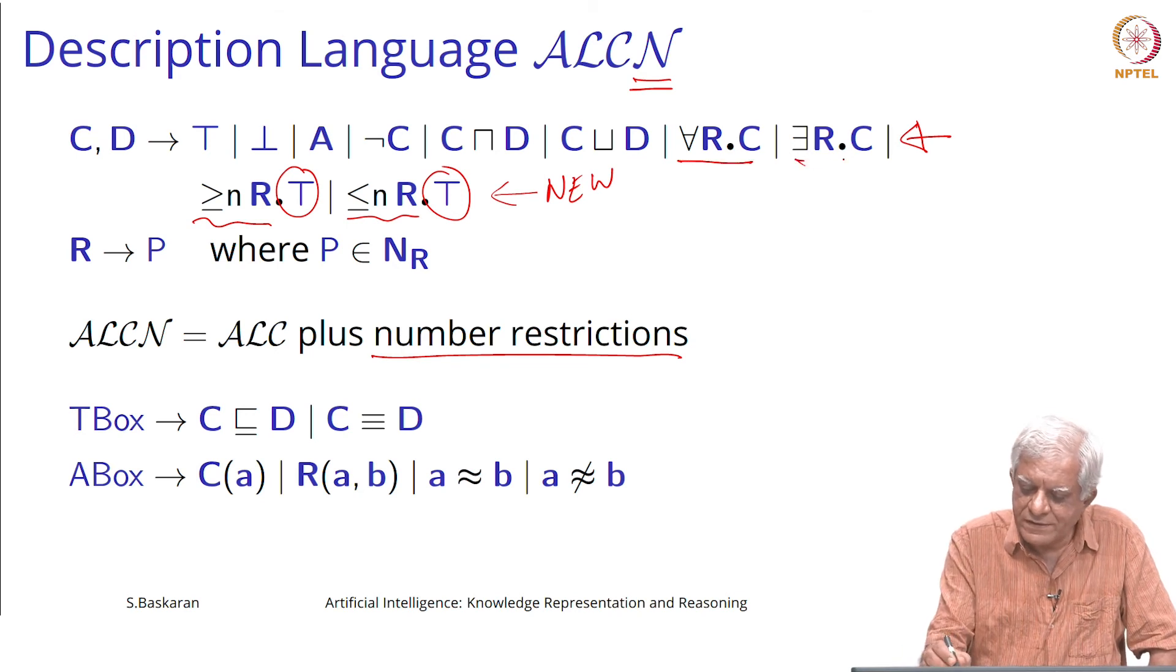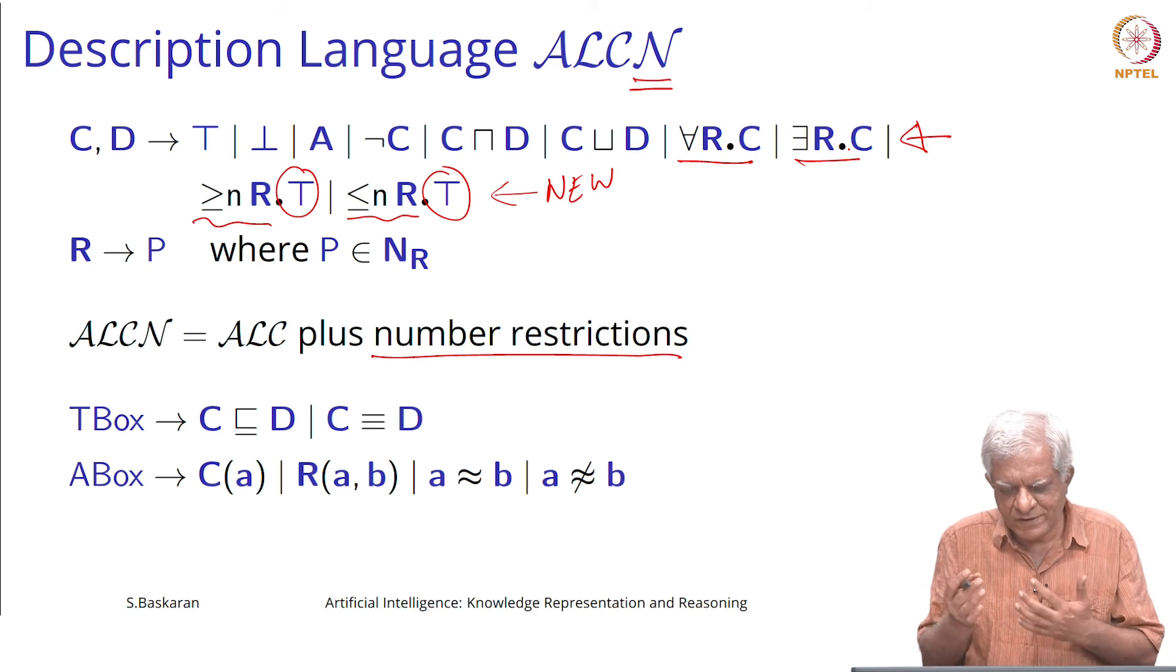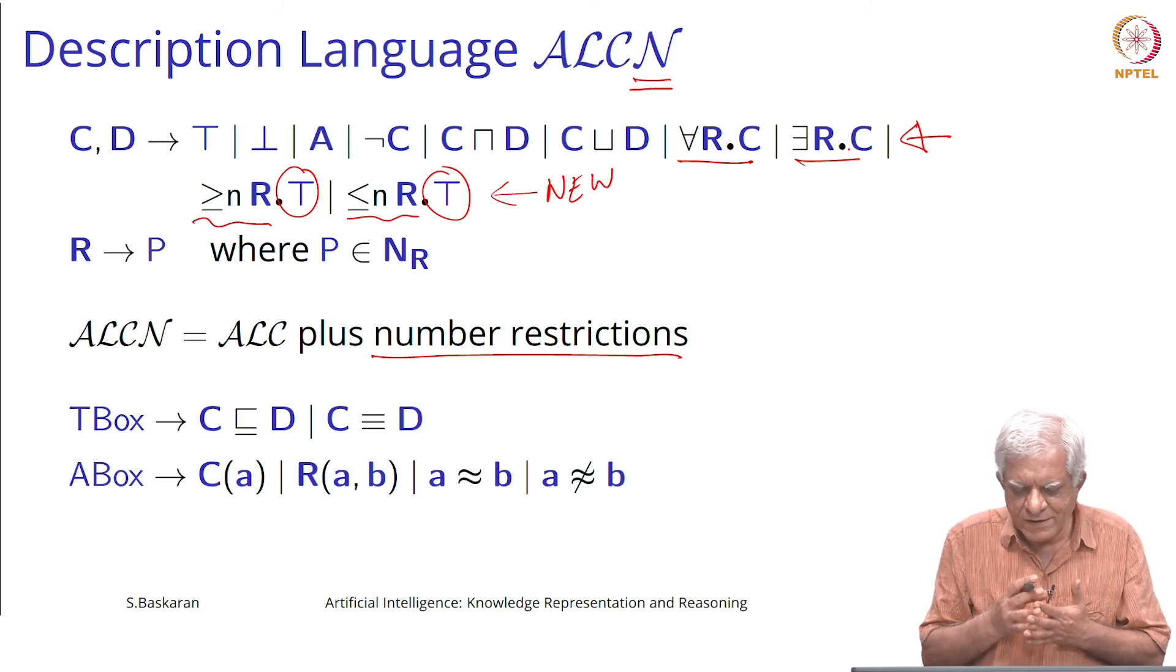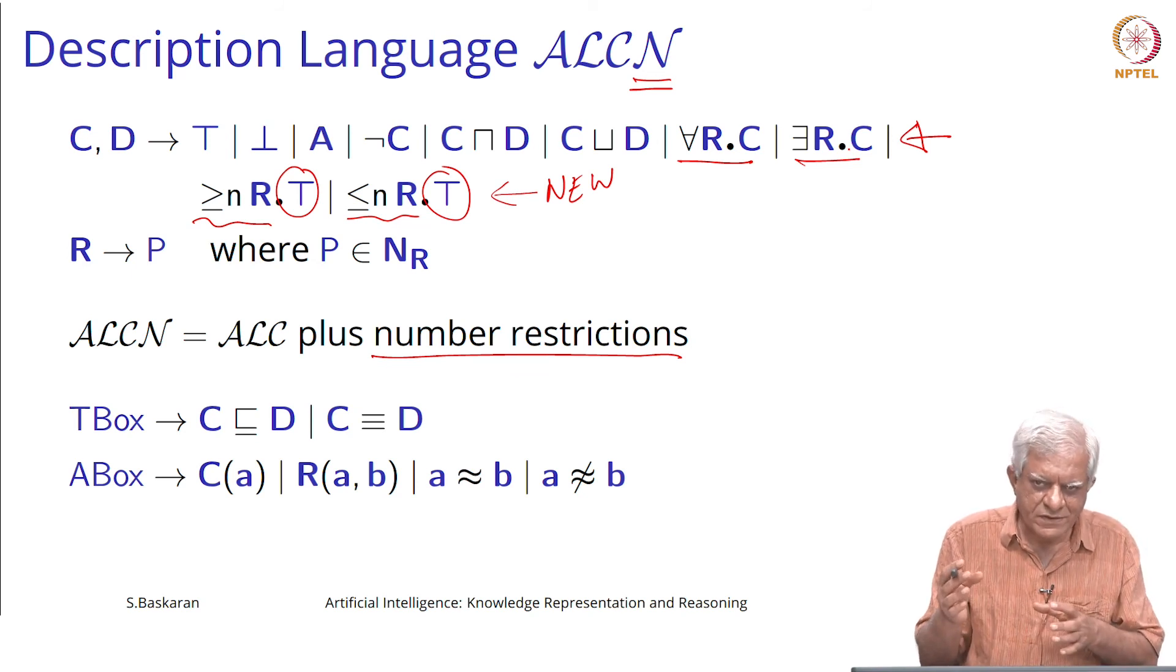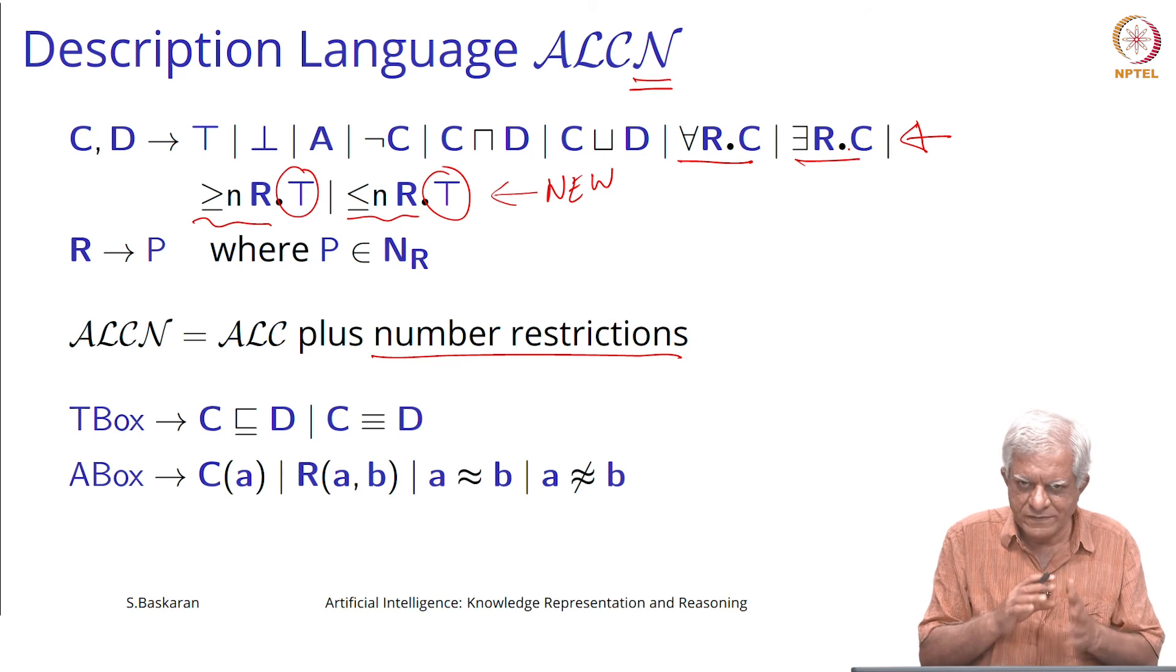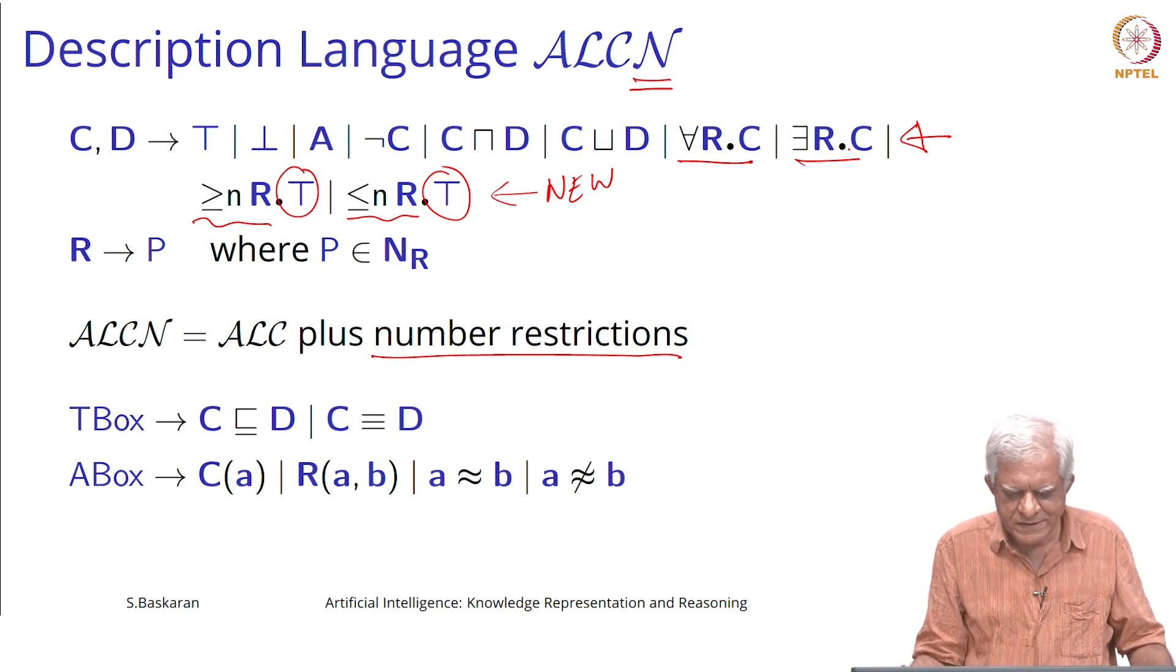You can talk of category and saying that all role fillers must come from class C or at least one should come from class C. But when you talk about numbers, you can say that you have at most so many role fillers or at least so many role fillers. We cannot talk about class C, and this is in this particular language ALCN.